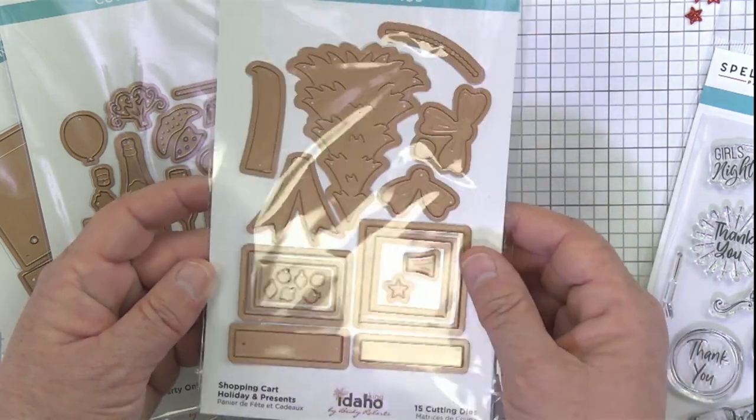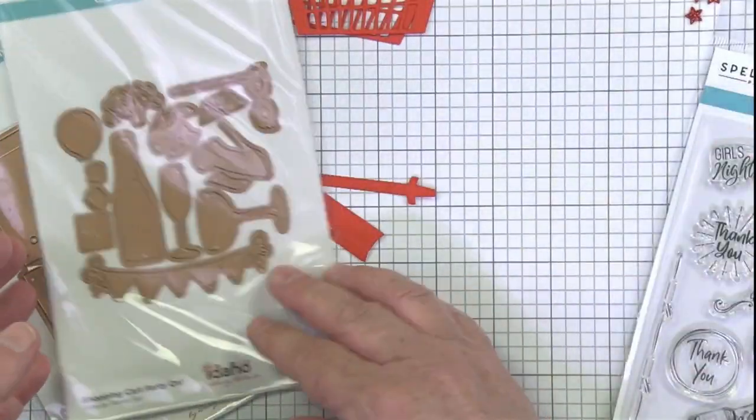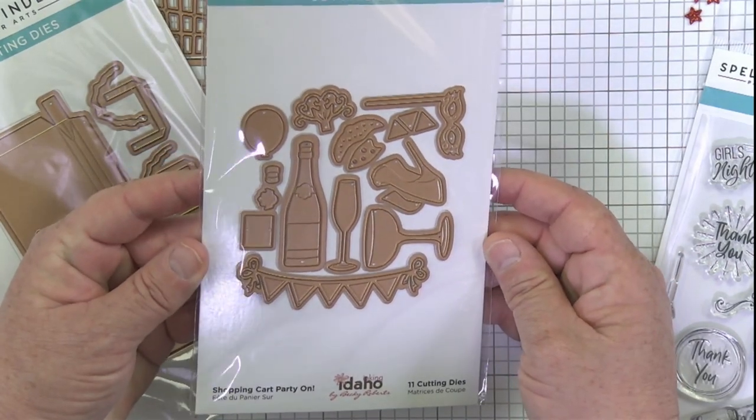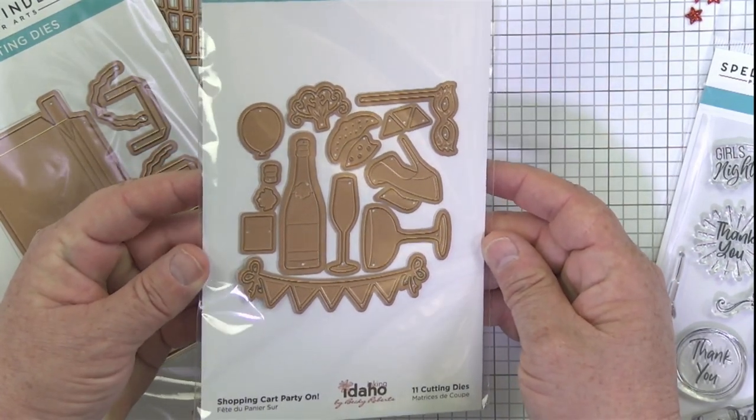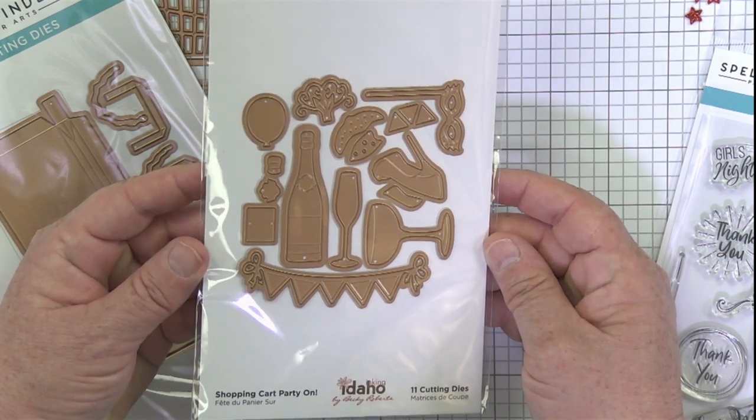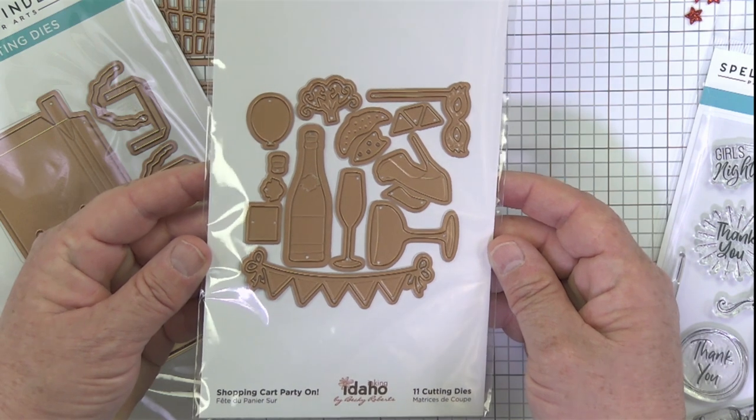Here's a darling one with a Christmas tree and some packages and bows. You can kind of see how this comes to life. You'll see lots and lots of different ideas on our blog here at Spellbinders or on Becky's blog. This launched a few weeks ago so it's definitely out in the social media universe.